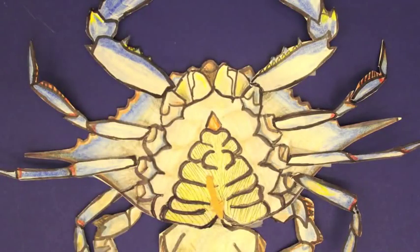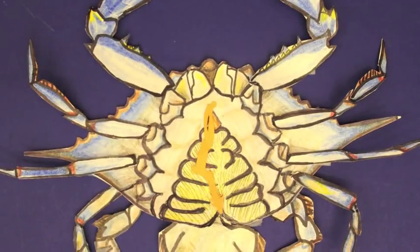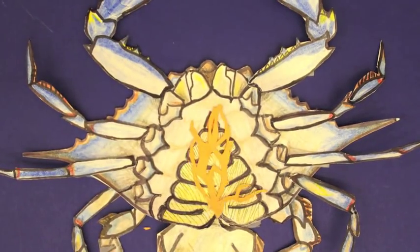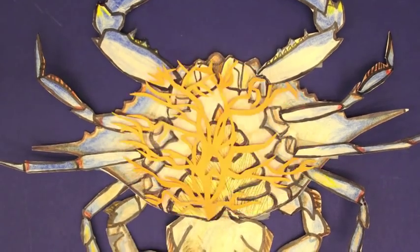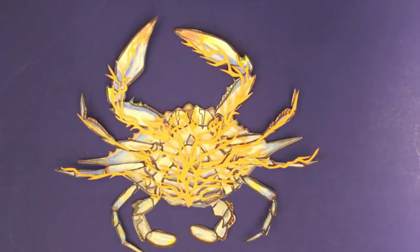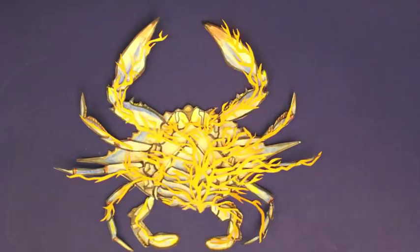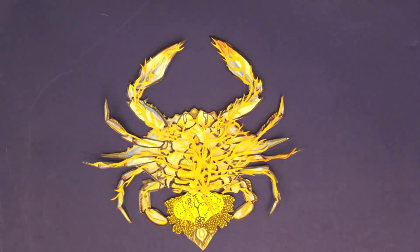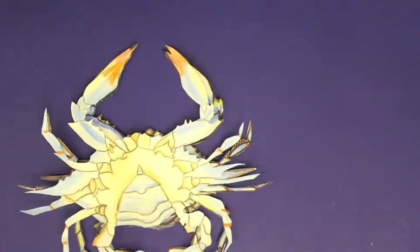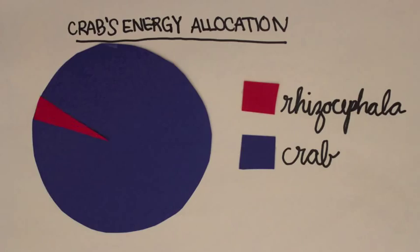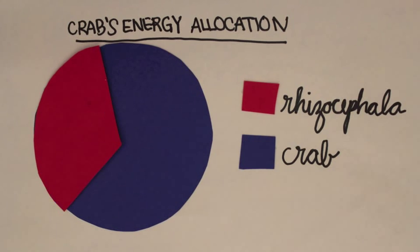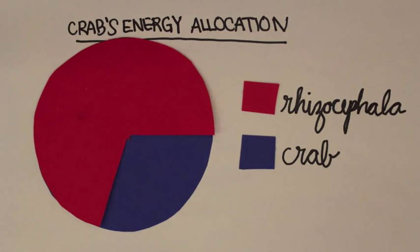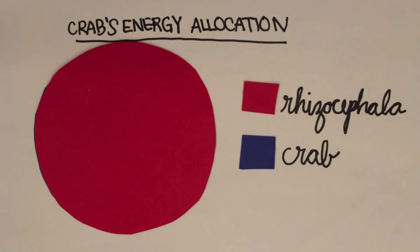Along the way, the rhizocephaline parasite alters the sexual behavior and morphology of its decapod host. For one, hosts start molting less frequently, which suppresses their growth. This ensures that as much of the host's energy resources as possible gets directed towards the production of rhizocephaline larvae.